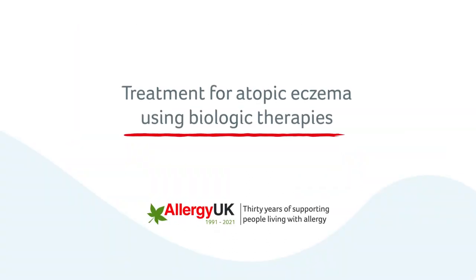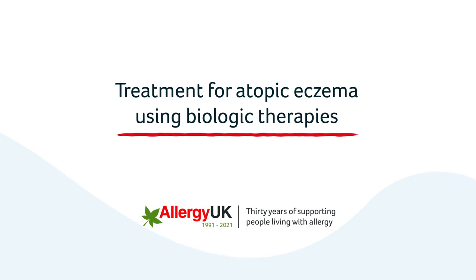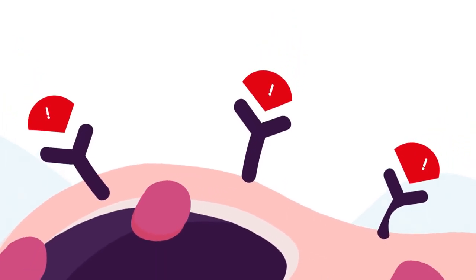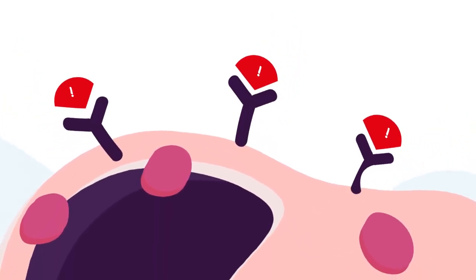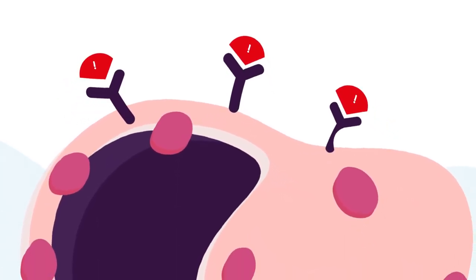Here we will look into biologic therapies in the treatment of adult atopic eczema. Biologic therapies work by blocking or preventing the chemical mediators in the immune system from being able to produce an allergic response and cause inflammation.